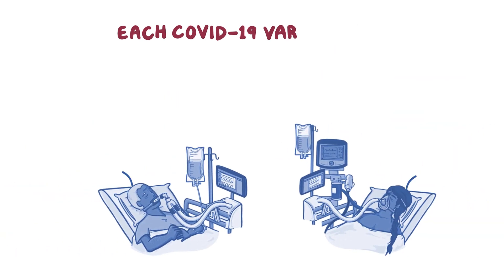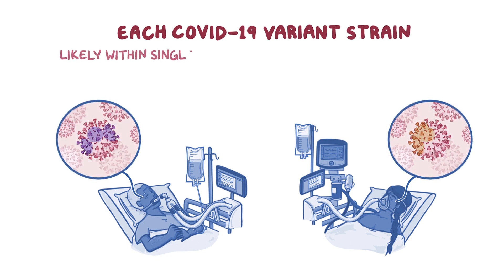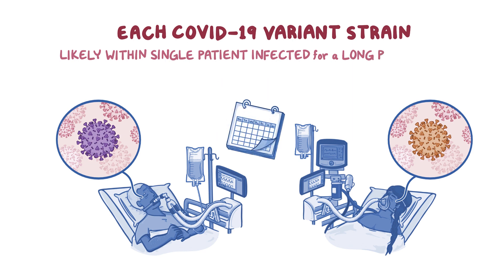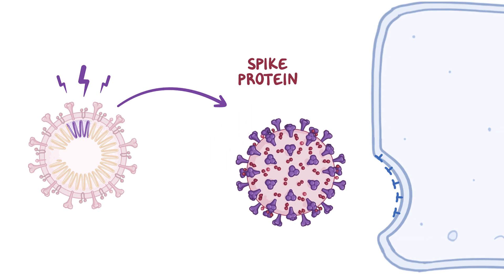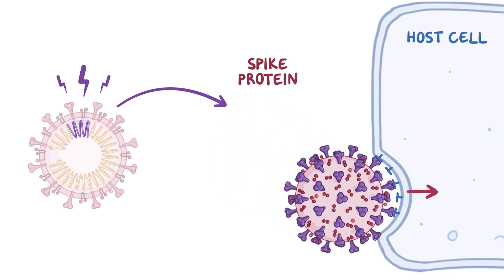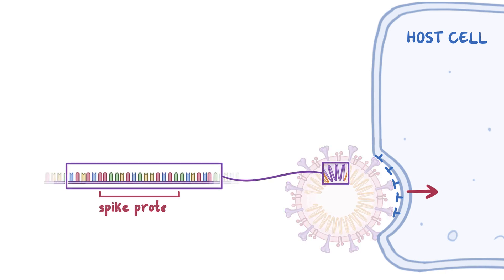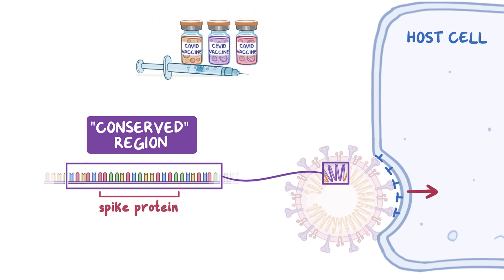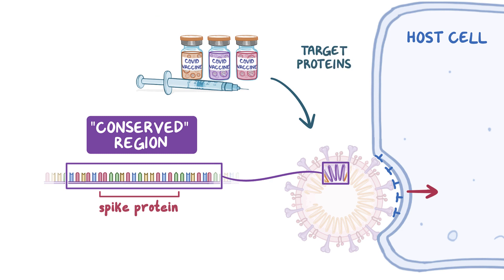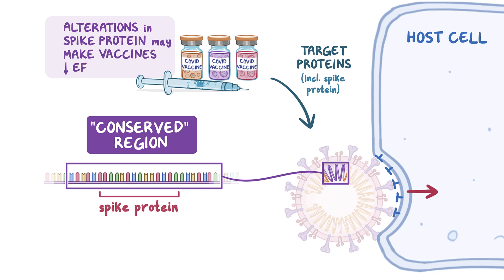For each of the COVID-19 variant strains, it's likely the mutations took place within a single patient who was infected with the virus for a long period of time. Most relevant COVID-19 mutations affect the spike protein, which is a protein located on the outside of the virus that can bind to the host cell, helping the virus enter the cell. The genetic code for the spike protein is within the conserved region, meaning the spike protein tends to be consistent across each new generation of the virus. Most of the developing vaccines have been targeting proteins on the virus, one of which is the spike protein, so alterations in the spike protein may make vaccines somewhat less effective.